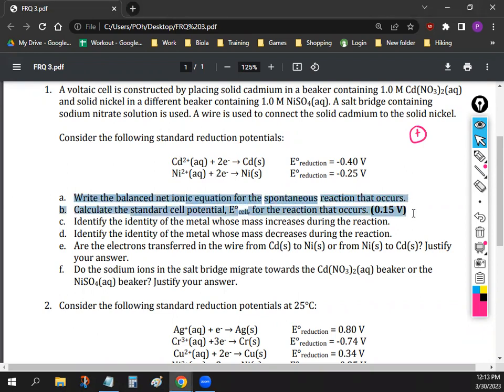It kind of gives you the answer already, and calculate the standard cell potential. So see if you guys can write the balanced net ionic equation using the two half-reactions, and calculate the standard cell potential, and the answer should be 0.15. Take about maybe three minutes to do that.